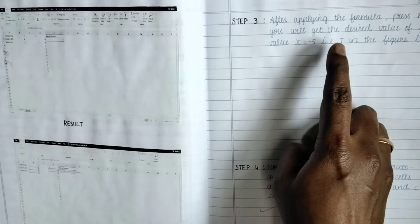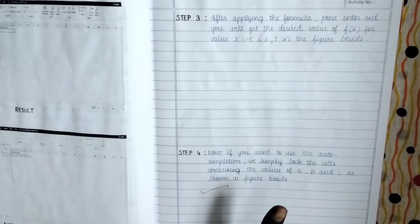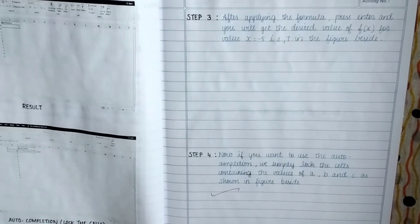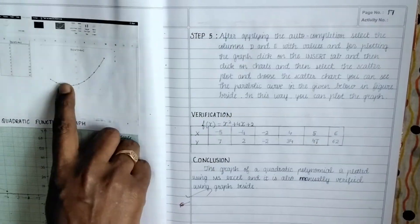Then similarly step three, how do you find the result. Okay, and step four, auto completion. You need to lock all the cells, only then you will get the graph. Then on the next page, see parallel, you will get the graph.